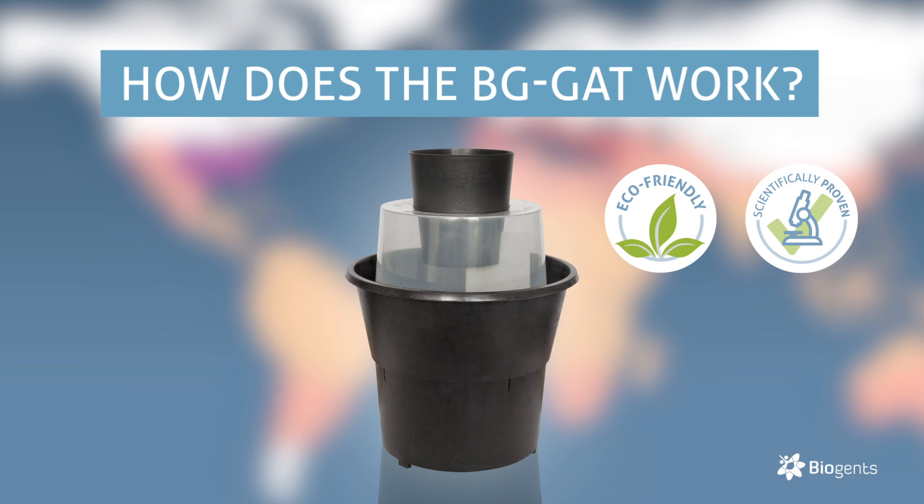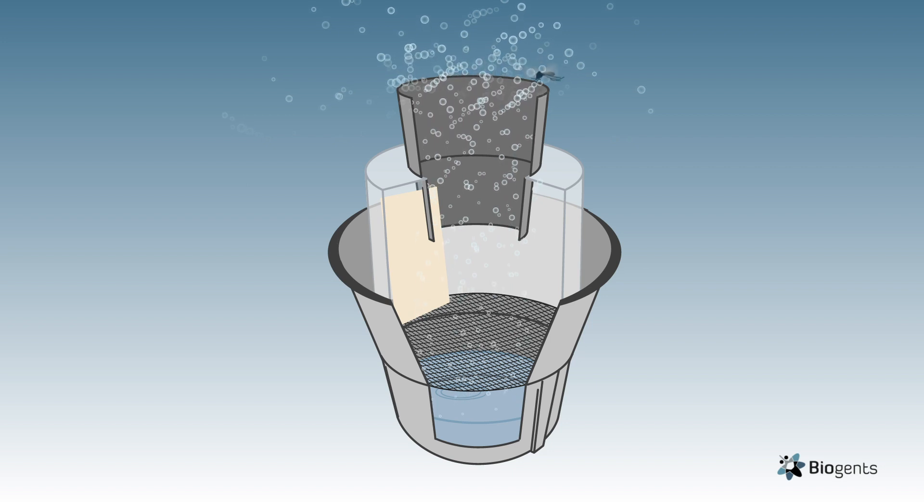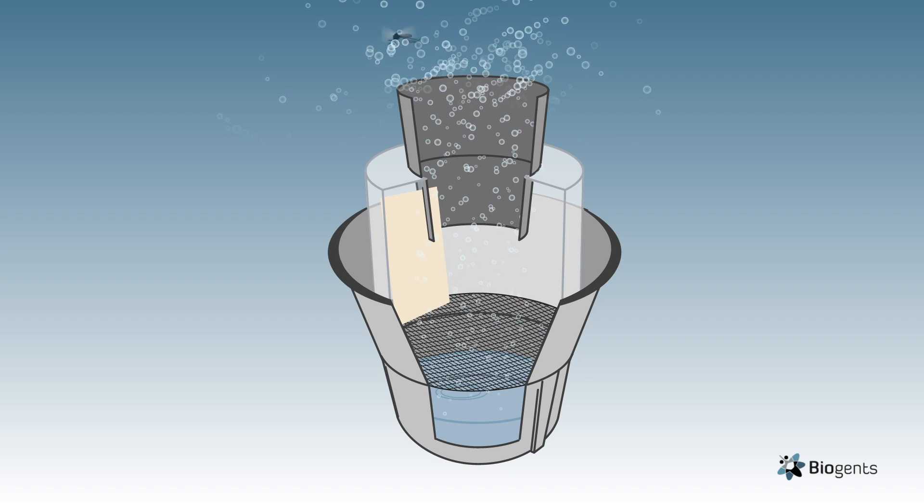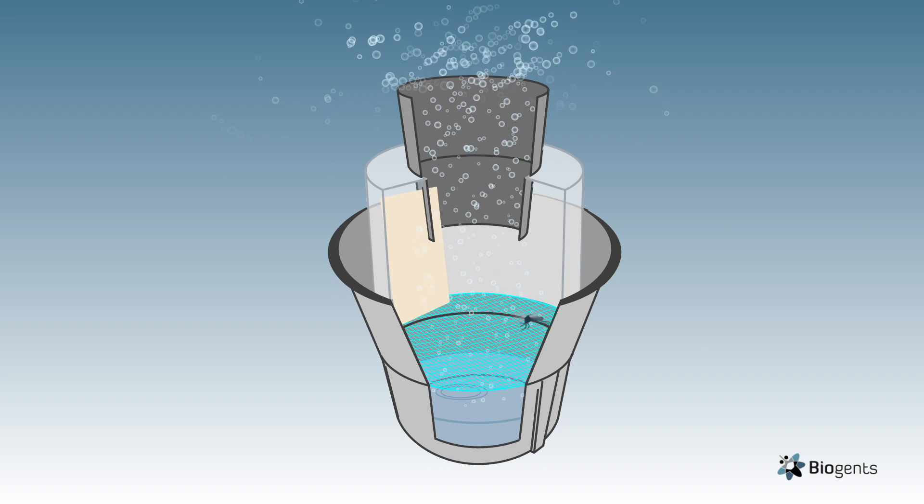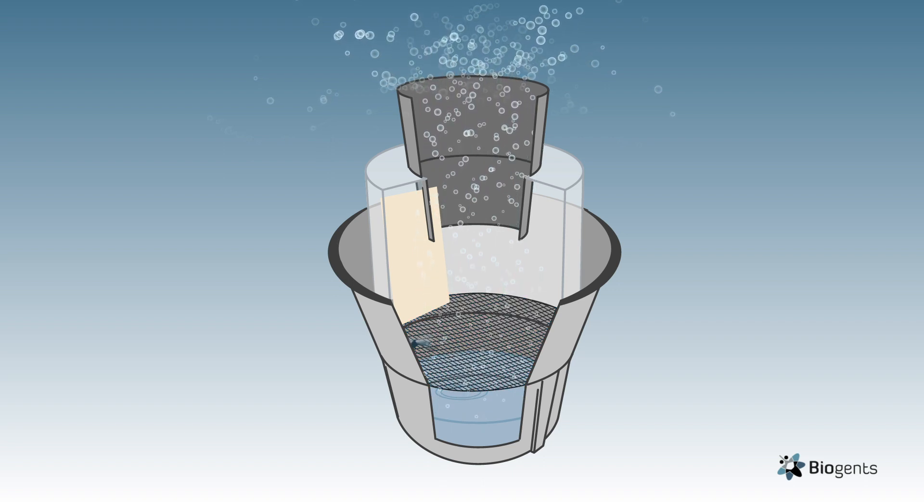How does the BG Gat work? Female tiger mosquitoes that have already bitten and now want to lay their eggs are attracted by hay-infused water and oviposition cues of the trap. They enter the transparent chamber through the funnel. The net provides a barrier between mosquitoes and the water and prevents the mosquitoes from laying their eggs.